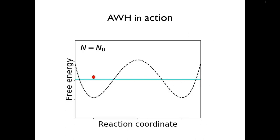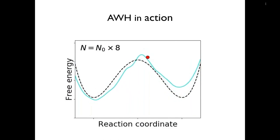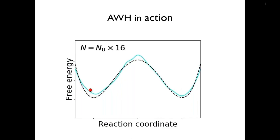Here is an example of how AWH works. This is again the simple system with two minima, and you see that the red particle goes from left to right, building up the biasing potential in blue, which over time becomes very similar to the free energy landscape shown as the black line. It converges nicely — if one ran longer, the differences would go to zero. At the top there is a scaling factor that controls the initial-to-final stage transition.